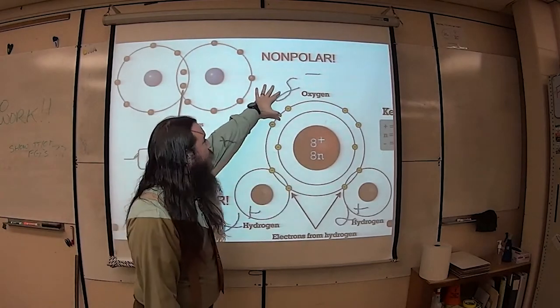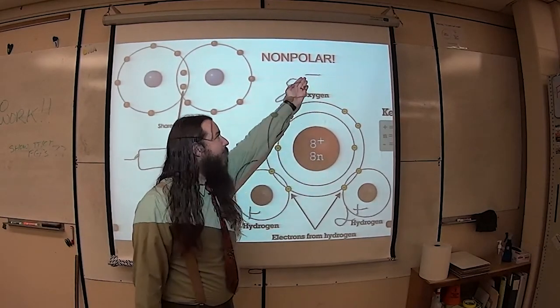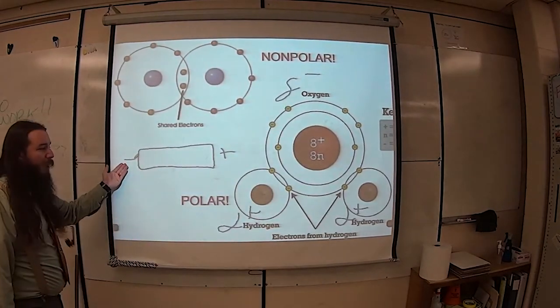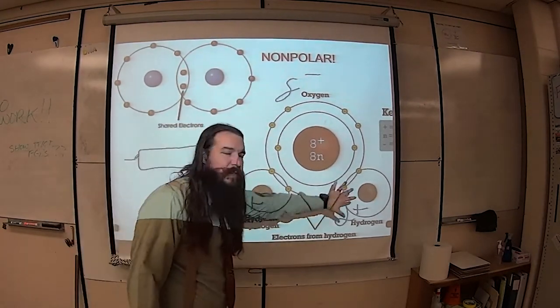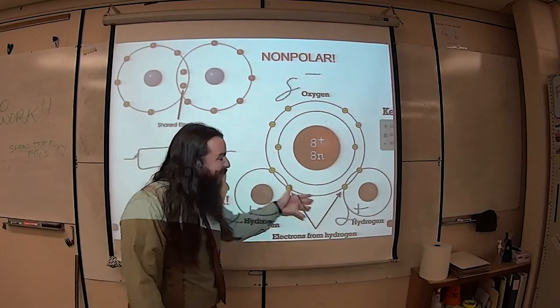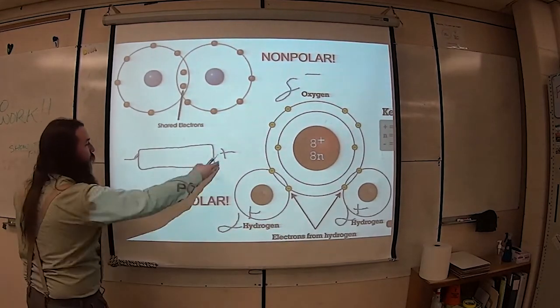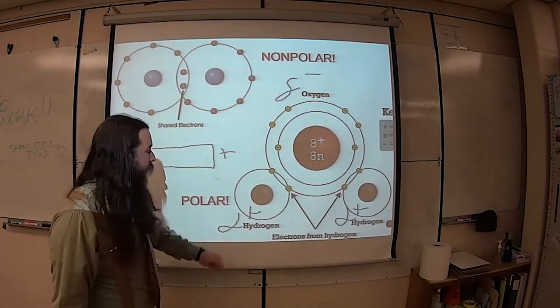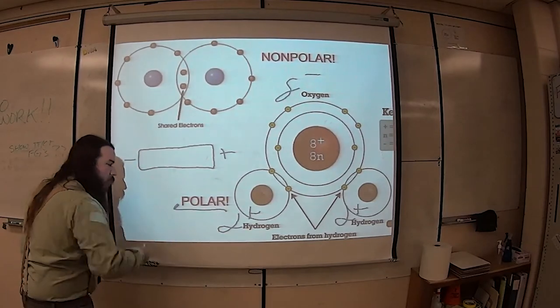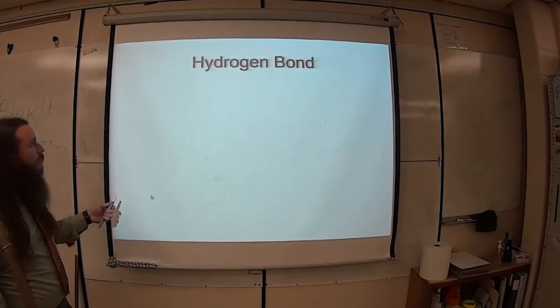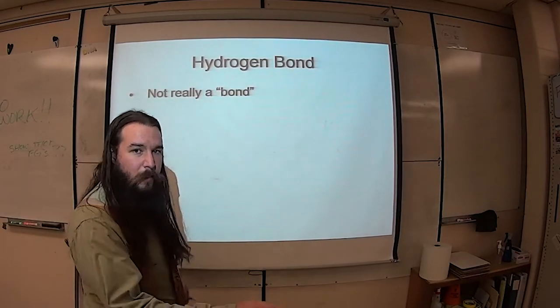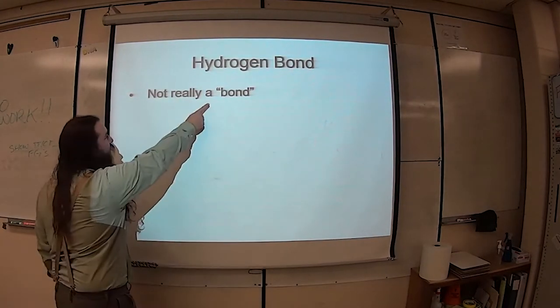That is why we call it a polar covalent bond. See there's a partially negative charge here that makes that end negative just like on our magnet. This end down here where the hydrogens are getting less access to the electrons is partially positive. And so as a result we've got our two poles, that's why they call it a polar covalent bond. And as a result we can get atoms that form a hydrogen bond.